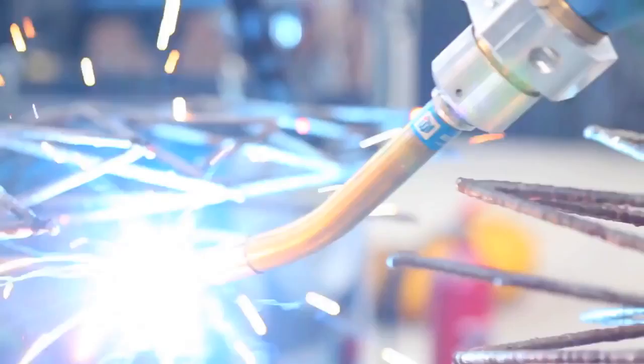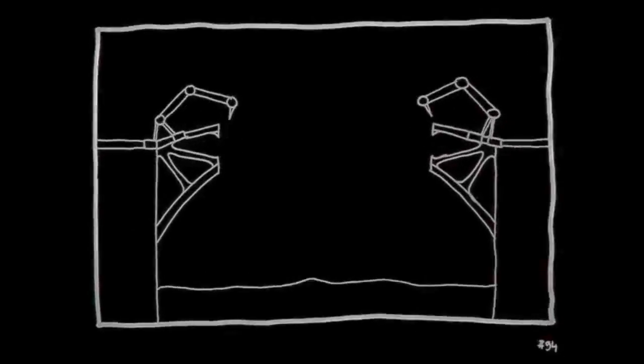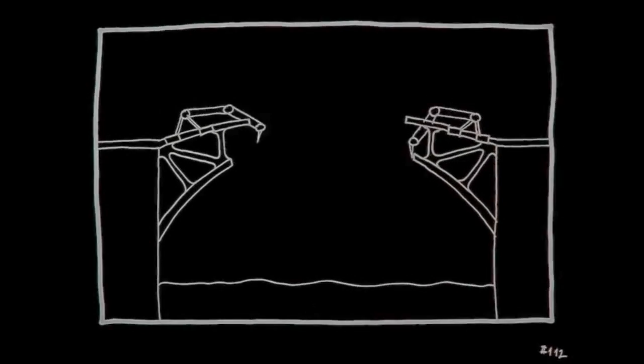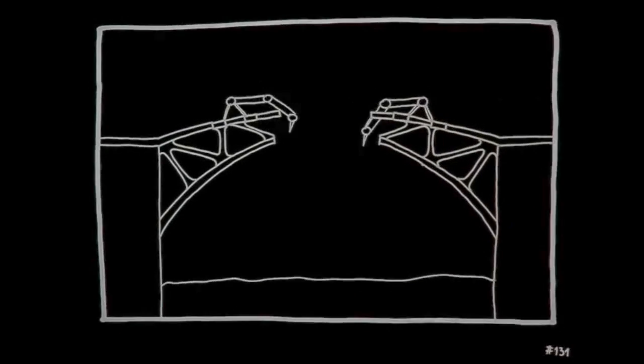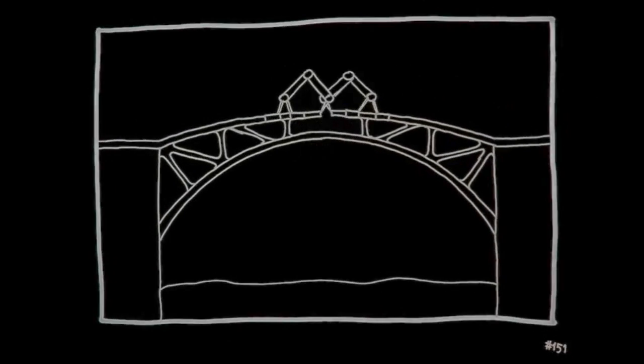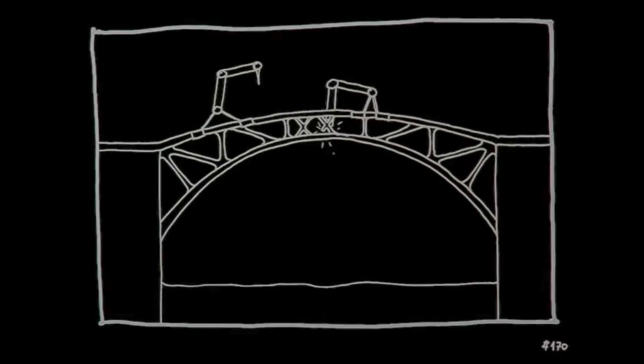The bridge is going to be fairly small. It's a pedestrian bridge. Still, it's a huge challenge because we want to print a bridge in one go. So we want the robots to actually print their own support structure as they move over the water.